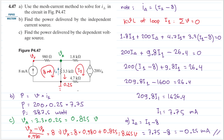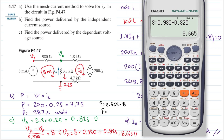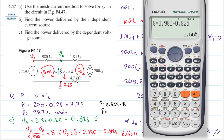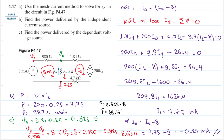We can now calculate the power. The power equals vx multiplied by the current, which is 8.6654 multiplied by 8 milliampere, giving 69.32 milliwatt. The unit is milliwatt because the current is in milliampere — sorry, not watt but milliwatt.